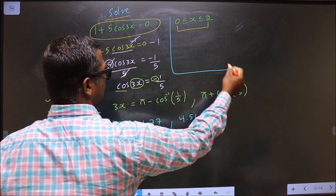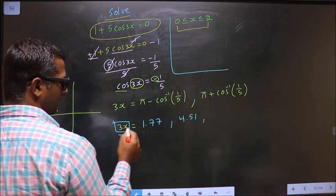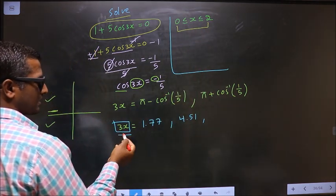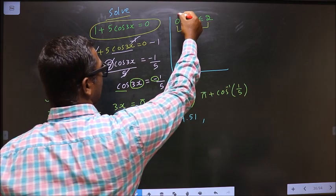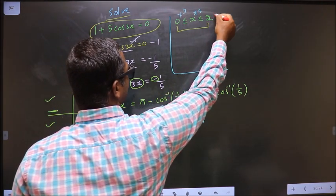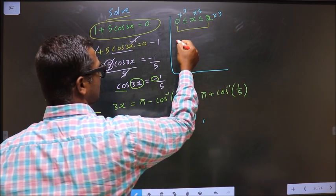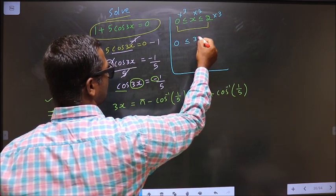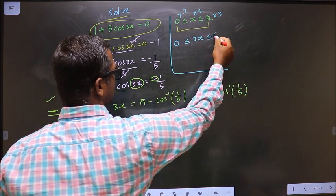Here x lies in this interval. We need to get 3x. For that you multiply by 3. So we get 0 less than or equal to 3x less than or equal to 6π.